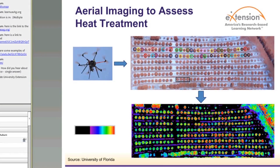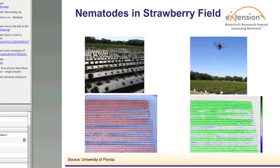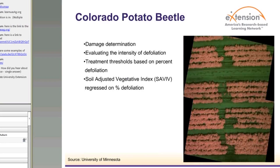Another interesting application of unmanned aircraft is to study the effectiveness of heat treatment of citrus trees for controlling greening disease. Researchers have used thermal cameras attached to unmanned aircraft systems for making decisions related to the effectiveness of such an approach. Yet another fruit crop-related application is concerned with evaluating alternative techniques to replace methyl bromide, and aerial images acquired from unmanned aircraft have been reported to be useful.